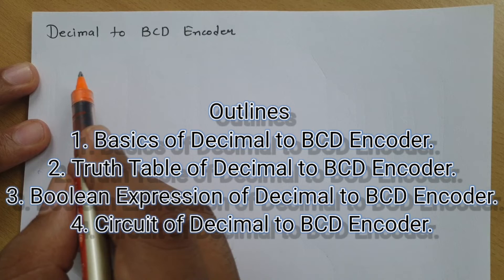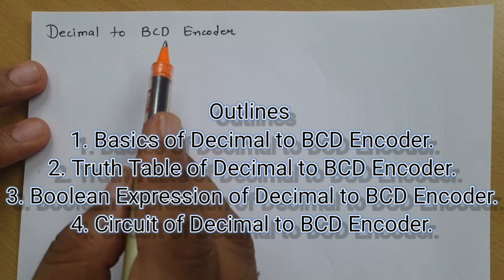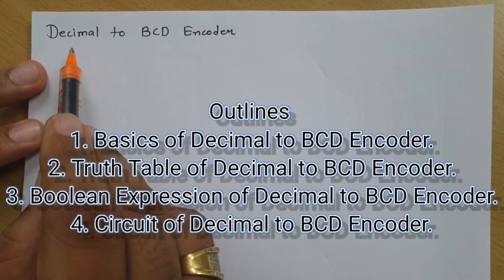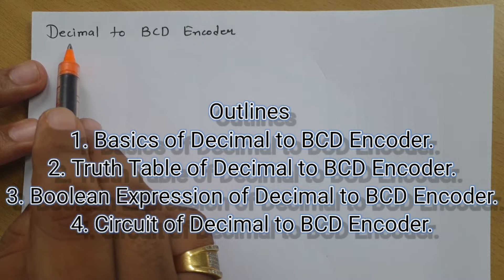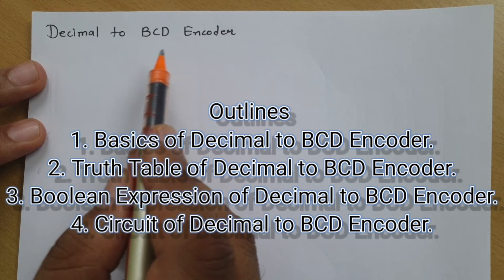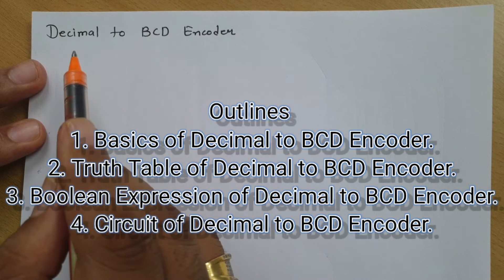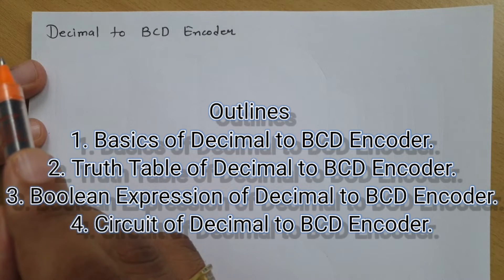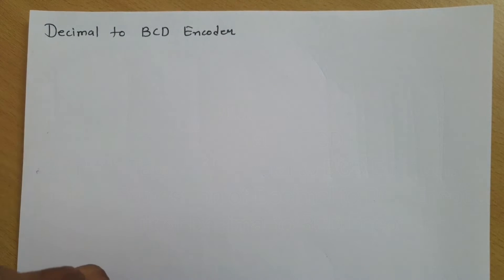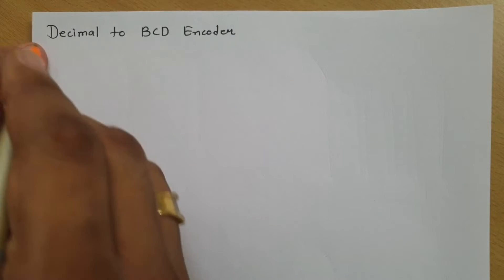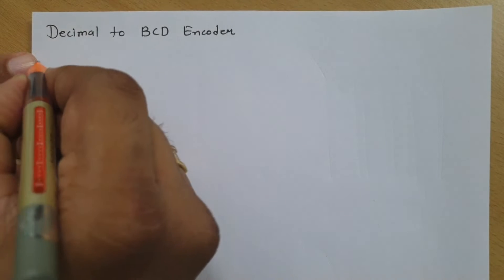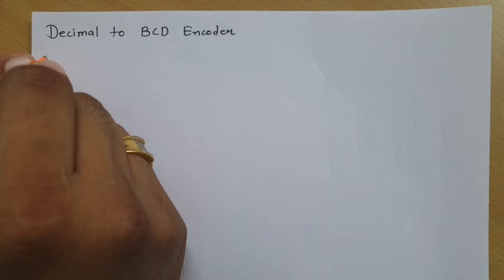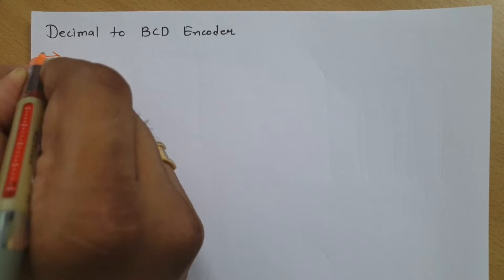After that we will make a truth table of decimal to BCD encoder. Then we will find Boolean expressions of decimal to BCD encoder, and at the end I'll explain how we can connect the circuit of decimal to BCD encoder. This encoder is something one can easily understand from its name.